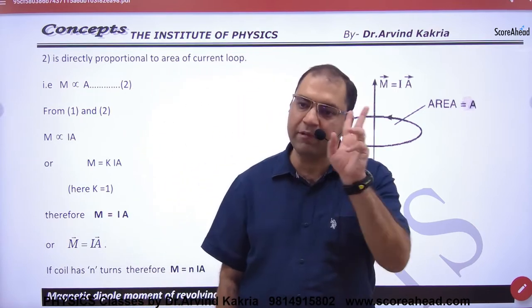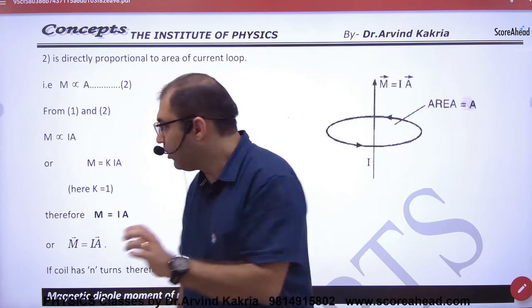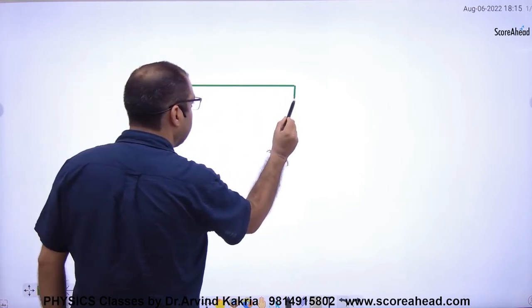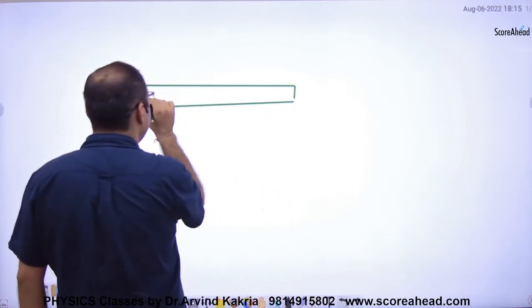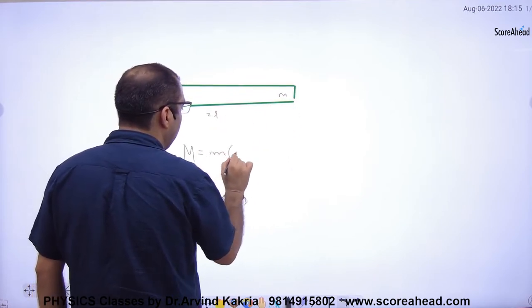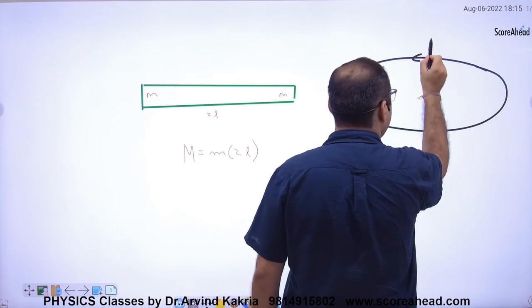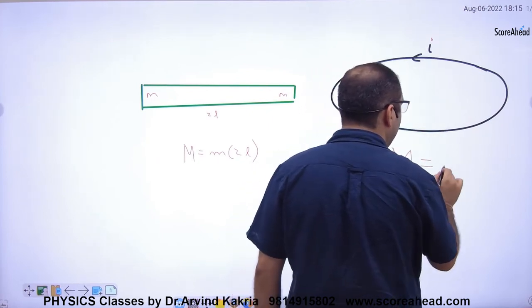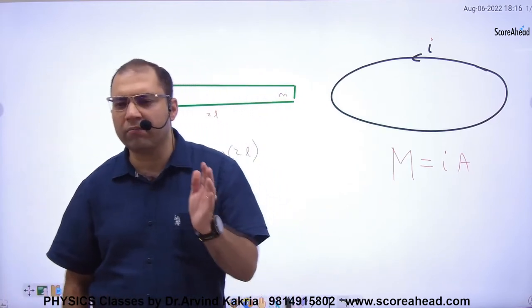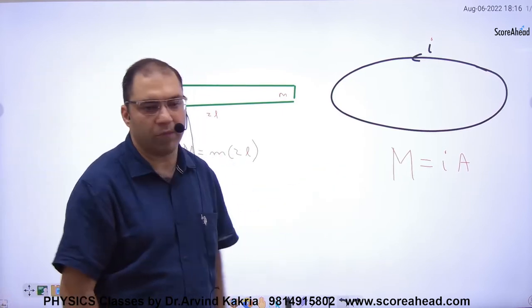In any question, you can have two types of problems. Either you will be given a bar magnet with pole strength small m and length 2L — so capital M equals small m into 2L. Or you will be given a current-carrying loop — so capital M equals current into area. Both formulas are different, so decide which formula to use based on what is given.